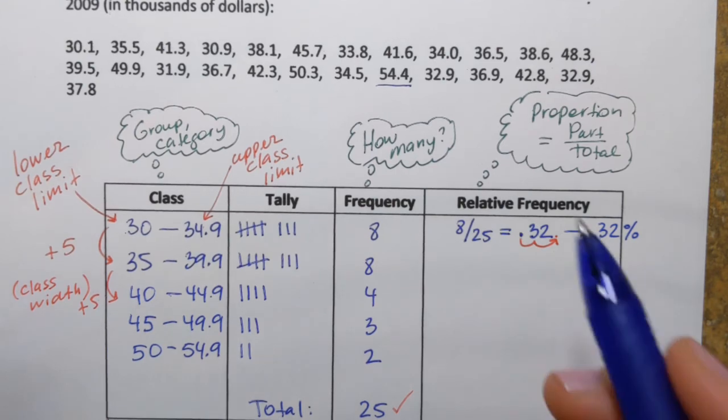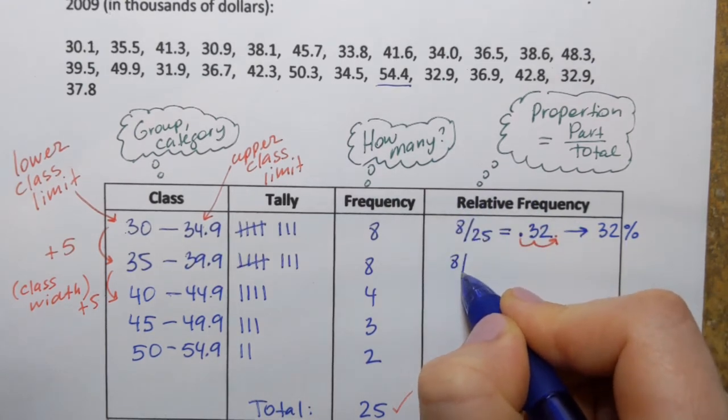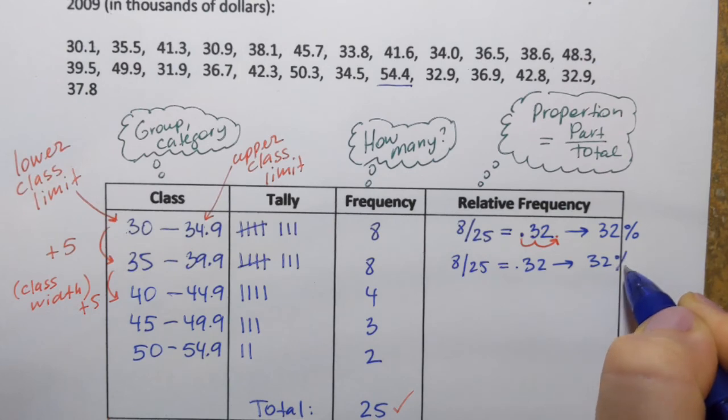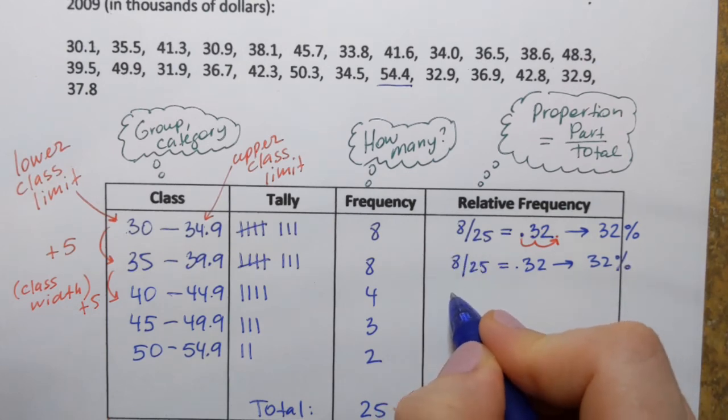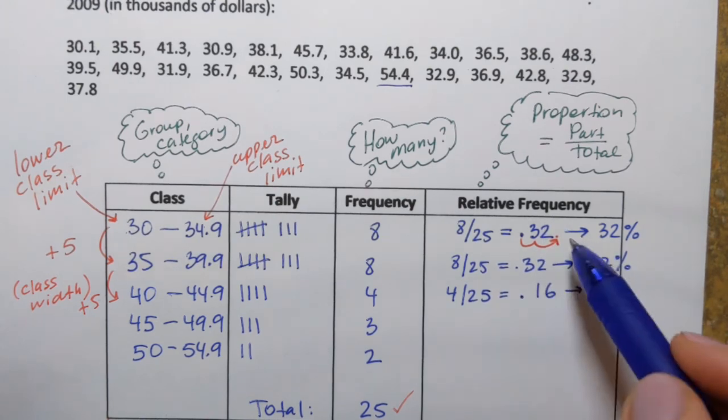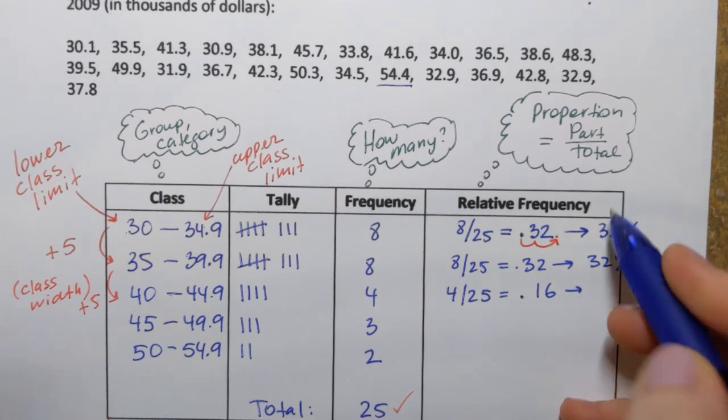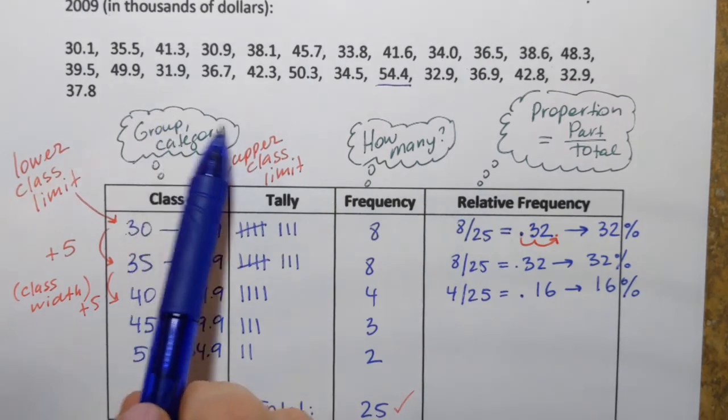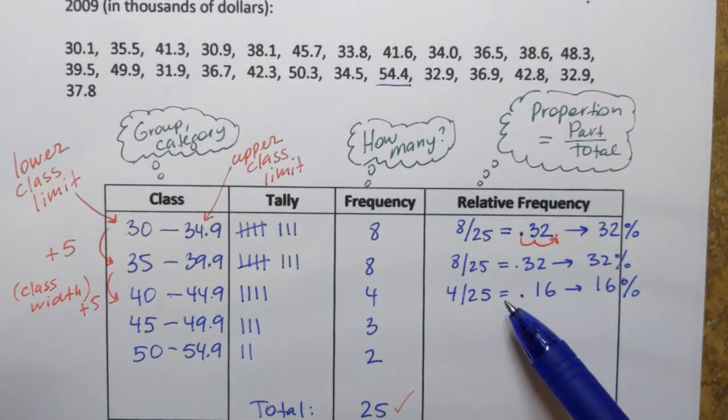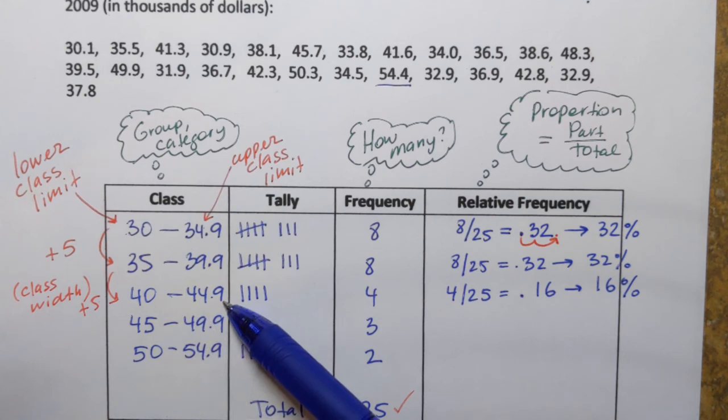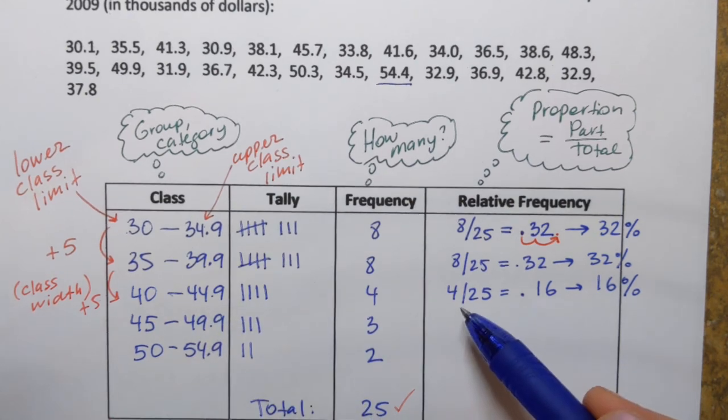So that's the idea of the relative frequency's proportion. Let's move on with the rest of the classes. So next one is the same. 8 over 25. That's 32 percent. Now for the third class, it's 4 over 25. And that is 0.16, which is if I move the decimal point two places to the right, I'll get 16. So 16 percent. So 16 percent of states, among those 25, have average household income after taxes in 2009 between $40,000 and $44,900. So you got the idea. So I'm going to add the other two.